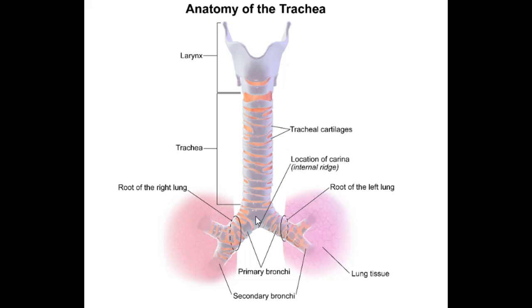At the carina, the trachea splits into two bronchi — these are the primary bronchi. An important point is that the carina is one of the most sensitive areas for triggering the cough reflex. The nerve supply of the trachea is the recurrent laryngeal nerve. The blood supply is from the inferior thyroid artery, a branch of the subclavian artery, and the venous drainage is via the brachiocephalic, azygous, and accessory hemi-azygous veins.